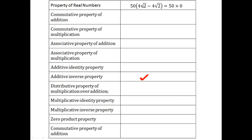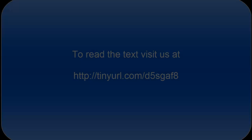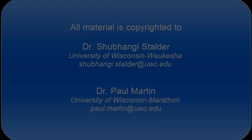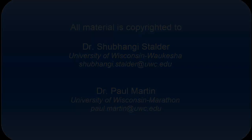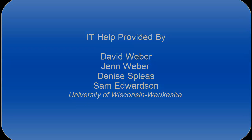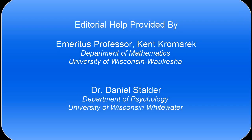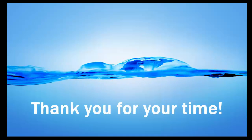When you add two numbers together and end up with zero, those two are additive inverses of each other. Next: 5 minus 0 is 5 because of the additive identity — zero is the additive identity. Finally, 5 times x plus y times x: we have distributed multiplication over addition.